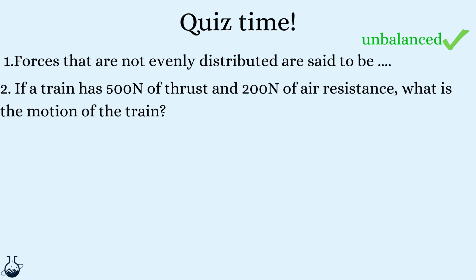Question two. If a train has 500 newtons of thrust and 200 newtons of air resistance, what is the motion of the train? Good job. Accelerating.